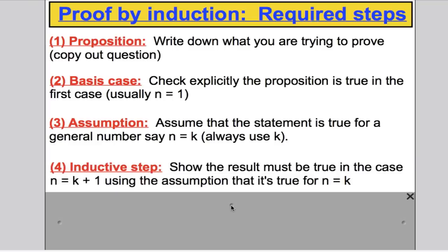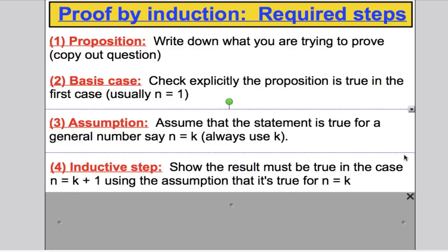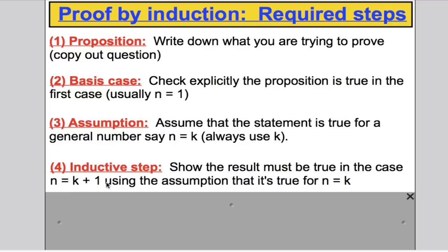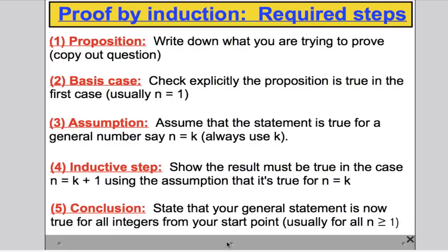The inductive step is the trickiest section. You have to show that if the result is true for n = k, then it must be true for n = k + 1 — showing the k + 1 case must be true using the assumption that it was true for n = k. The last step is your conclusion: you must state that your general statement is now true for all integers from your starting point onwards, usually n ≥ 1.